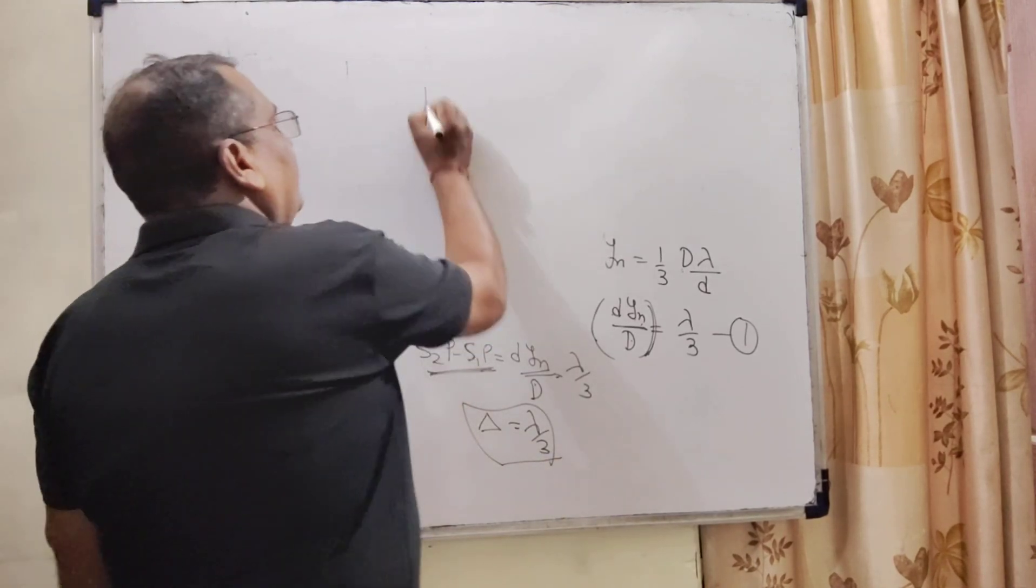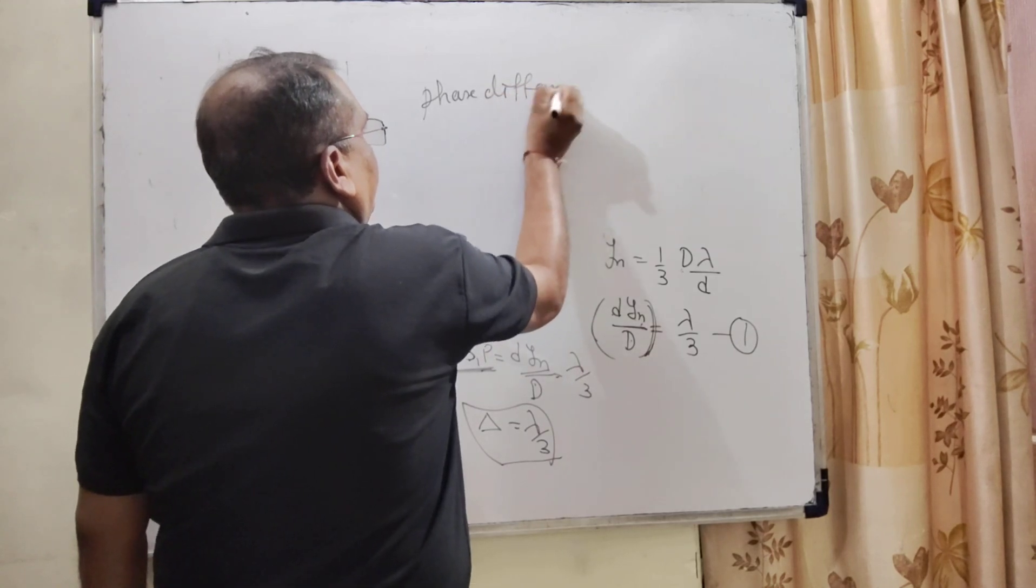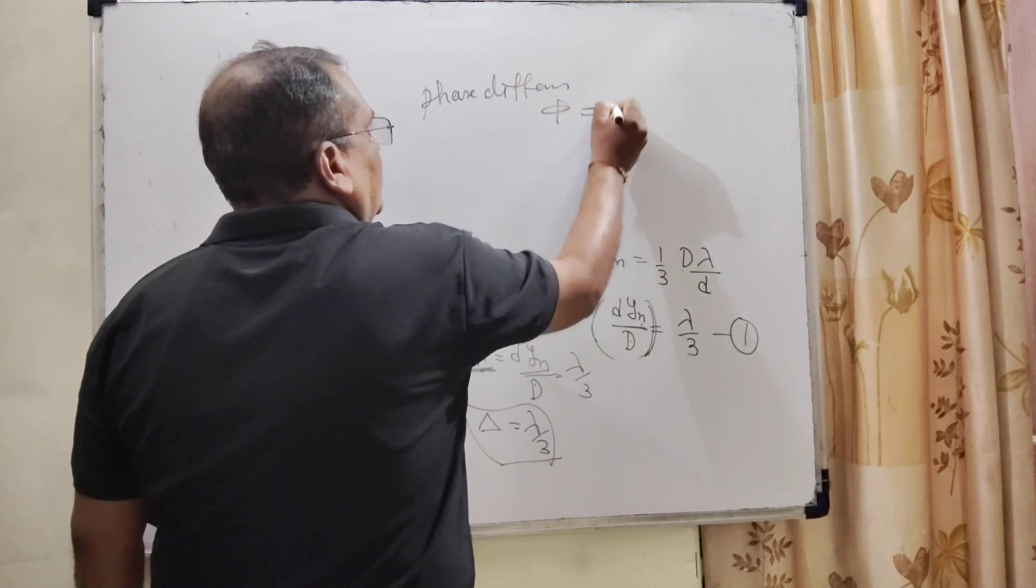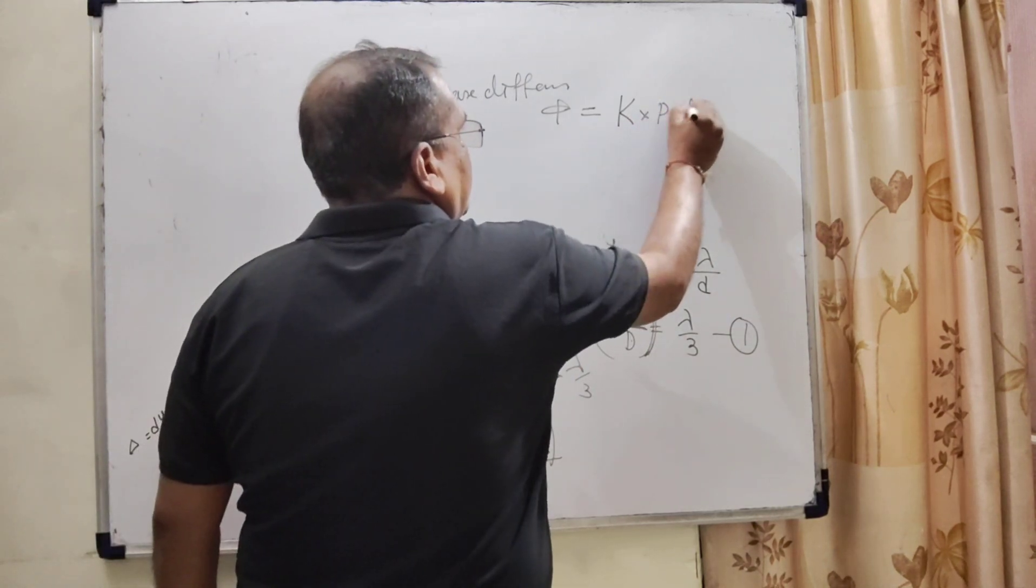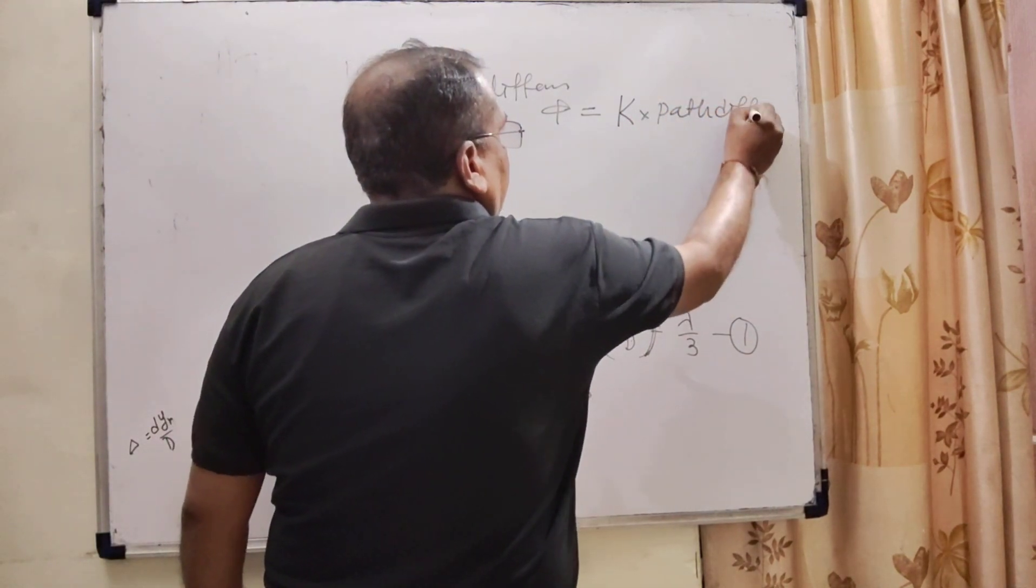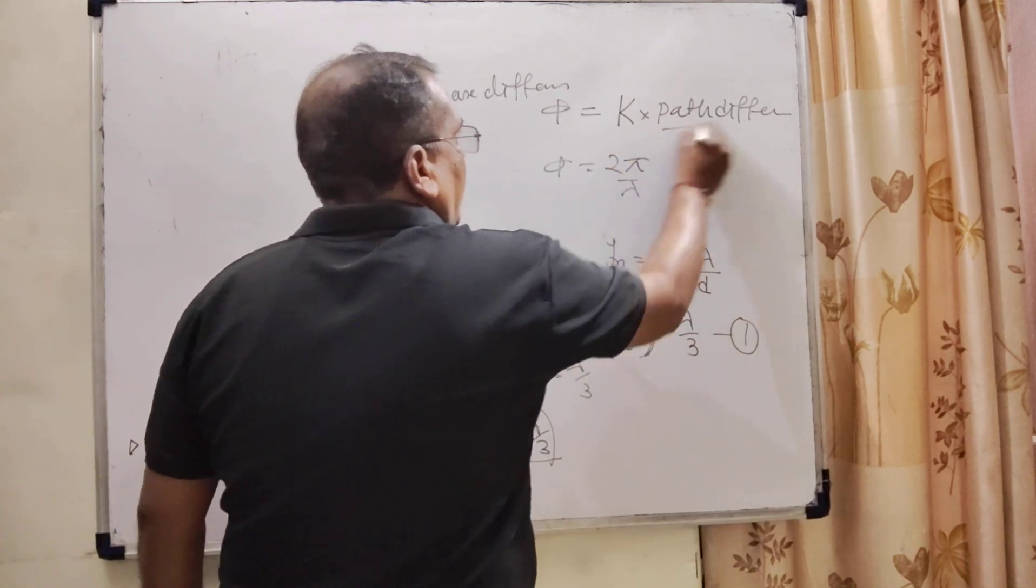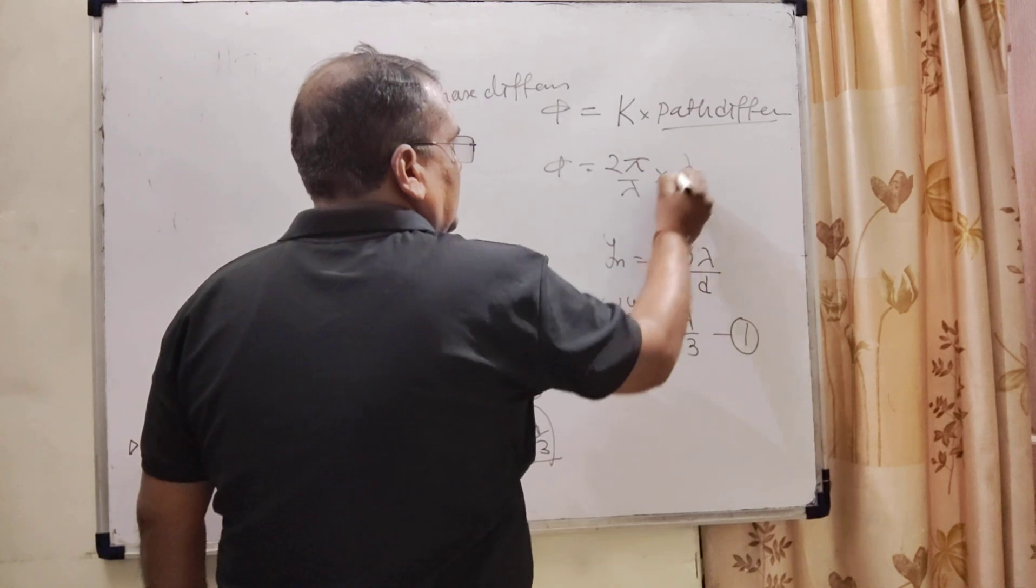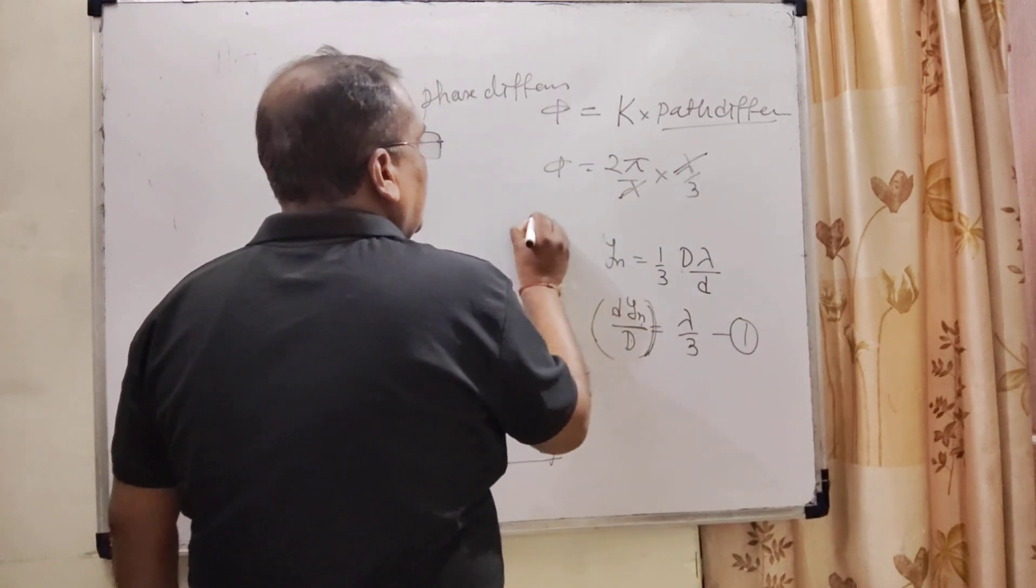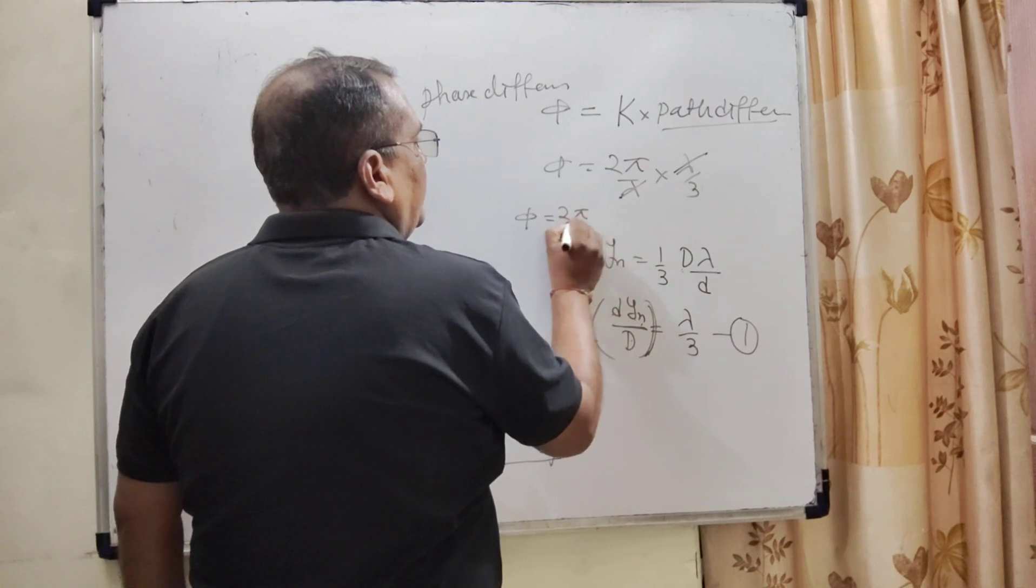Now, as we know that phase difference phi is equal to k into path difference. Here k means 2 pi by lambda and what is path difference? That is lambda by 3. So here lambda and lambda cancel out.